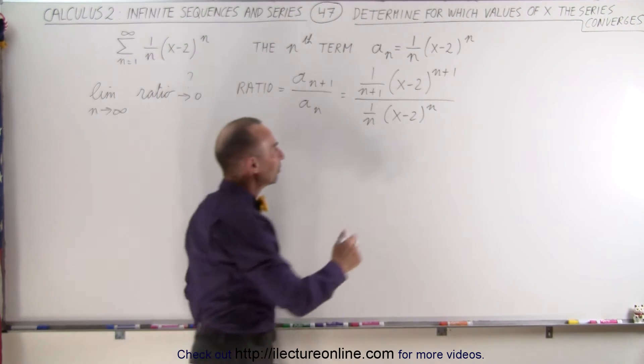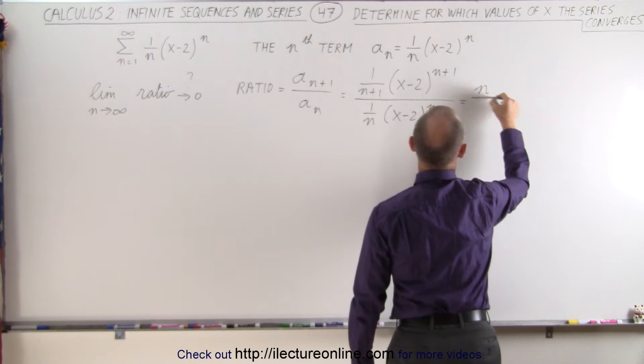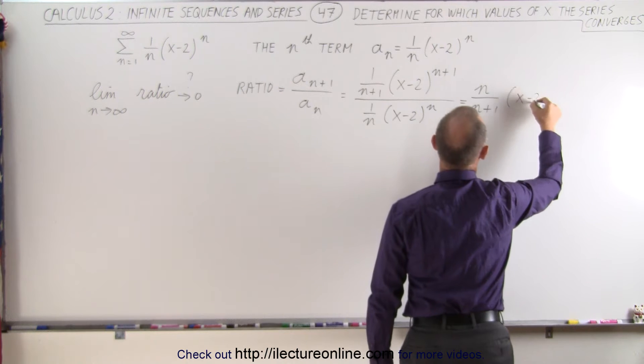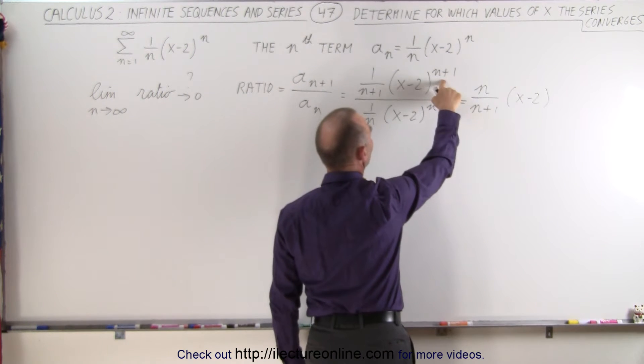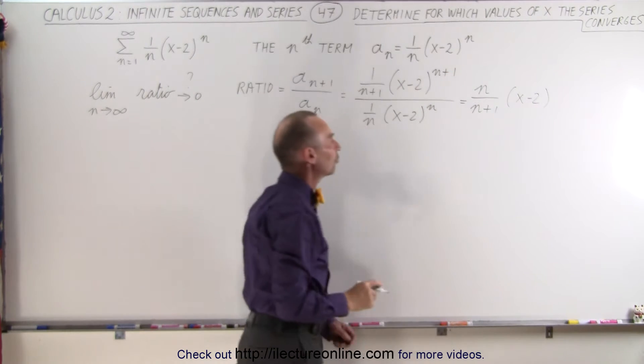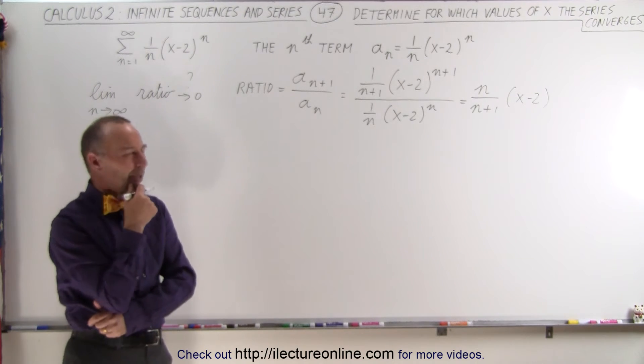The x minus 2 will simplify to the following. We can write this as n over n plus 1 times x minus 2 to the first power, because if we write x minus 2 to the n plus 1 divided by x minus 2 to the n, we subtract exponents, we get x minus 2 to the first power.